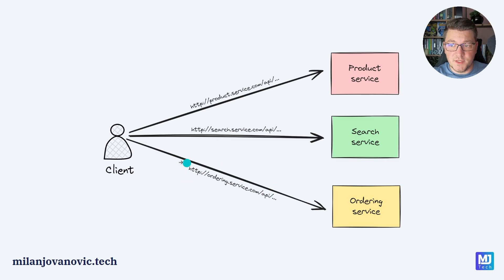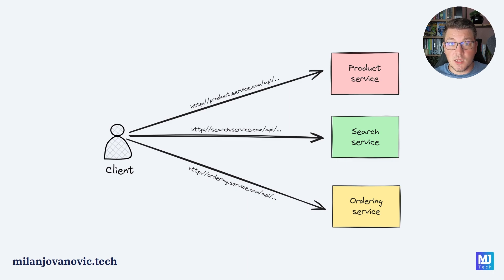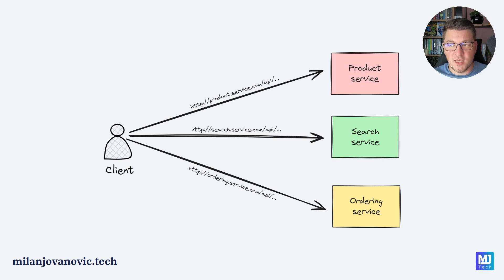One way to solve this is to hard-code the physical addresses of all of the downstream services so that we can call them. Where this becomes problematic is when we have a large number of services to integrate with. Managing all of those physical addresses is a problem on its own, and it becomes even more interesting when we scale out our services and each downstream service could have multiple physical addresses. How do we figure out which one we want to call?